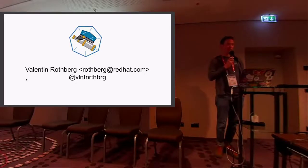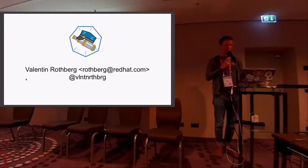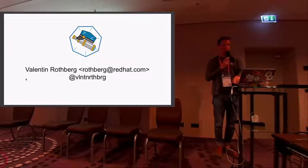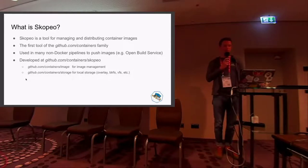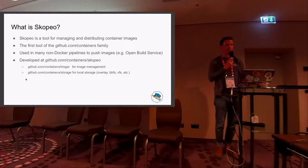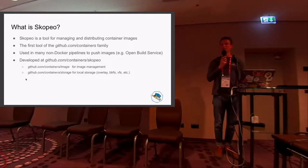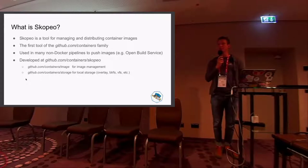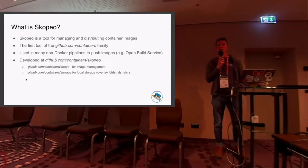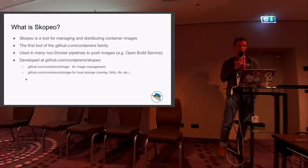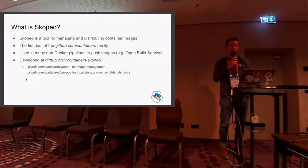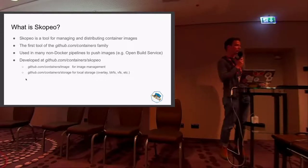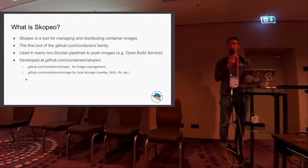The fourth tool is Scopio. Scopio is a tool for managing and distributing container images. It was actually the first of the tools in the GitHub containers family. It started with a pull request — I think it was 2014 or maybe 2015 — by a colleague from Red Hat, Antonio Murdaca, who wanted to add a feature to inspect remote images.